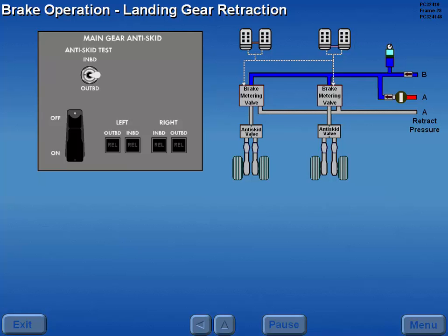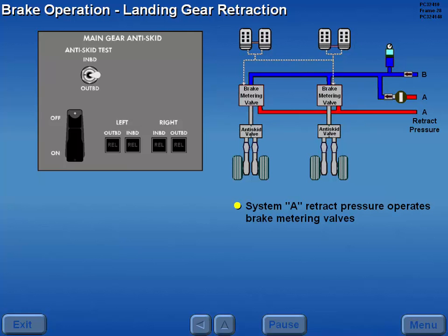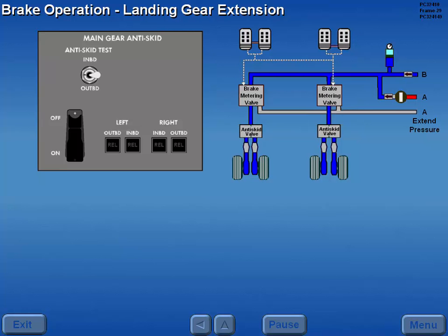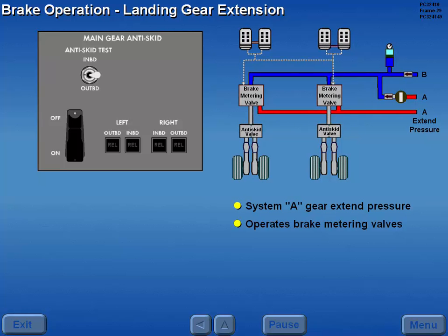To stop wheel spin during gear retraction, system A landing gear retract pressure automatically operates the brake metering valves, allowing system B brake pressure to apply the brakes. During landing gear extension, system A landing gear extend pressure operates the brake metering valves, automatically releasing the main wheel brakes.